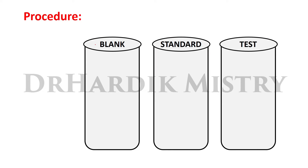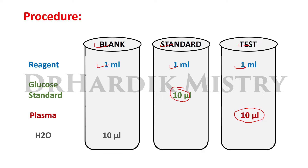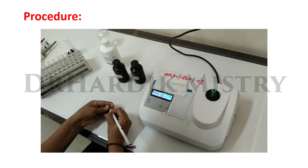For the procedure, take three test tubes and label them blank, standard, and test. Add 1 mL of reagent to all three test tubes. Add 10 microliters of glucose standard to the standard test tube, 10 microliters of plasma to the test test tube, and 10 microliters of water to the blank test tube. Mix well, incubate at 37°C for 10 minutes, and read absorbance at 520 nanometers.